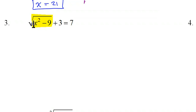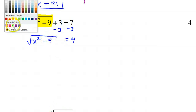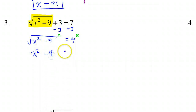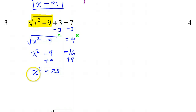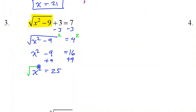As before, we need to get the radical part by itself. Subtracting 3 from both sides gives the square root of x squared minus 9 equals 4. Squaring both sides gives x squared minus 9 equals 16. Adding 9 to both sides gives x squared equals 25. Taking the square root of both sides — but be careful, because the solution could be positive or negative — gives x equals plus or minus 5.